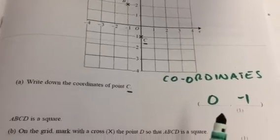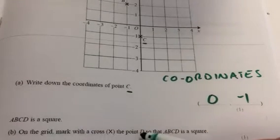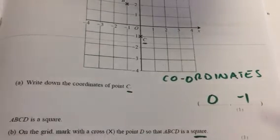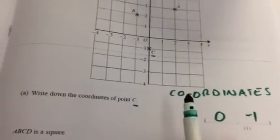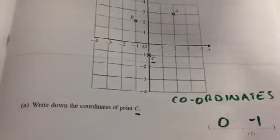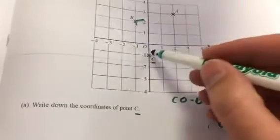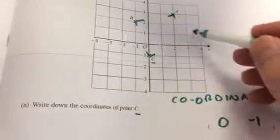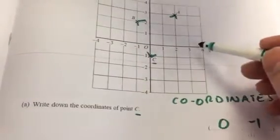It asks us to mark with X the point D so that ABCD is a square. So if I just look at that picture clearly there, you can see I'm going to have a right angle there, right angle there. I know my answer for D will be somewhere over here.